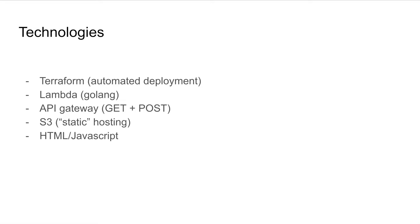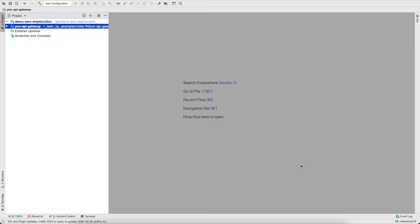We're going to set the API Gateway to process GET and POST requests and pass those through to your Lambda. The static hosting — not entirely static because we'll have JavaScript in there — will be in S3. This is where your HTML and JavaScript will live, and of course we're going to use HTML and JavaScript to build the front end for the user.